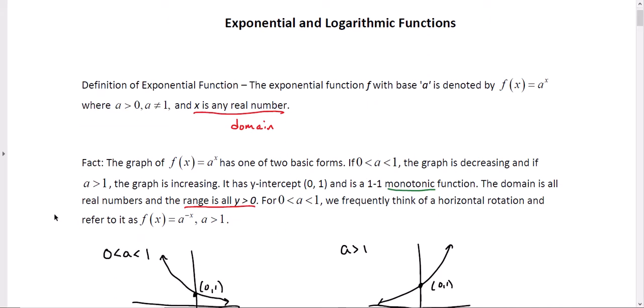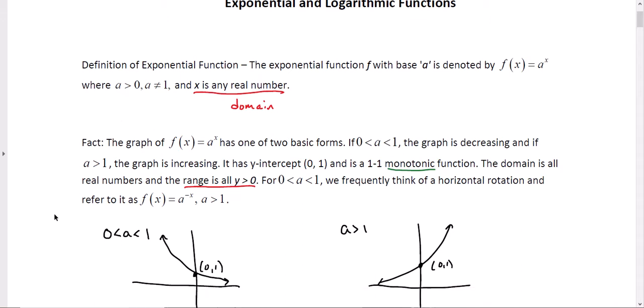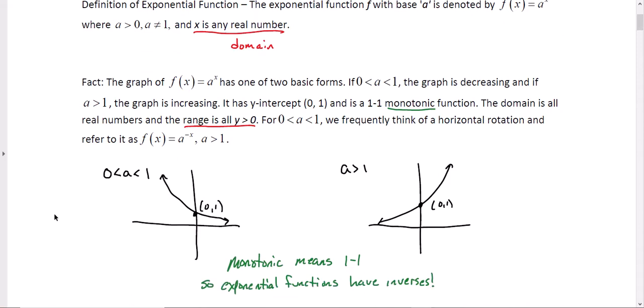Now here's a fact. The graph of f(x) = a^x has one of two basic forms. And these two basic forms are shown in a very crude manner here in black. If the a value is what we call a proper fraction, so it's between 0 and 1, the graph will be decreasing. If the a value is bigger than 1, and it could still be a fraction, but it might be a fraction like 3/2 that simplifies to a decimal number bigger than 1, the graph will be increasing.